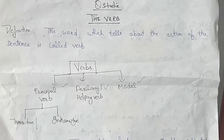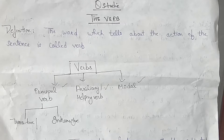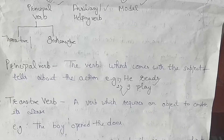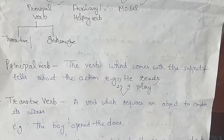The principal verb comes from our transitive and intransitive verb. The second verb is our auxiliary verb — is, am, are, will. The modal verbs are must, should, will, shall. Now, what is the principal verb? It is the verb which comes with the subject and tells about the action.